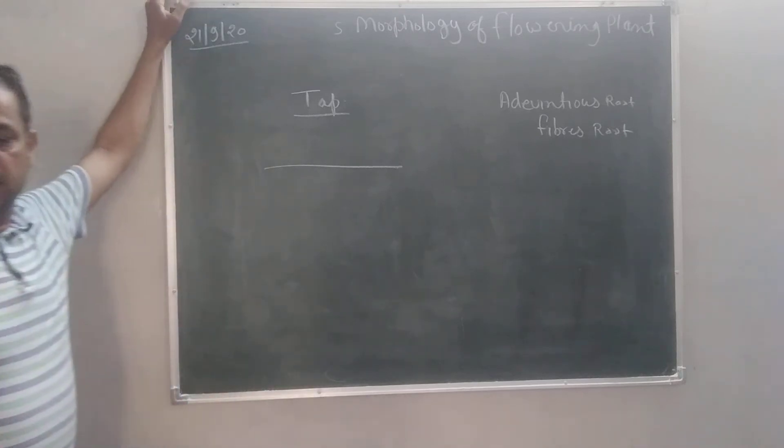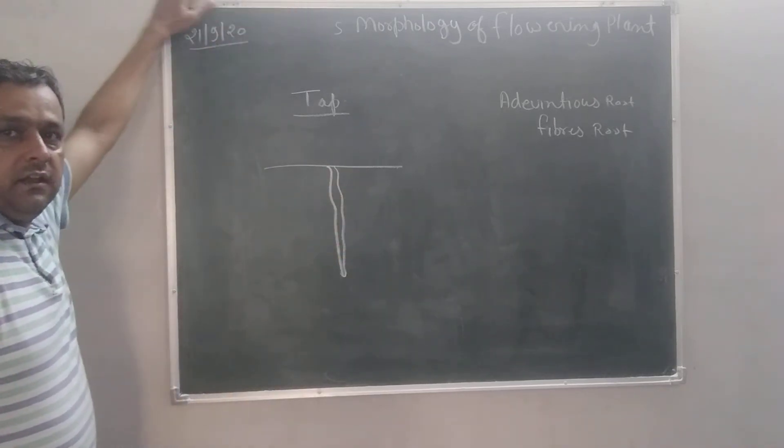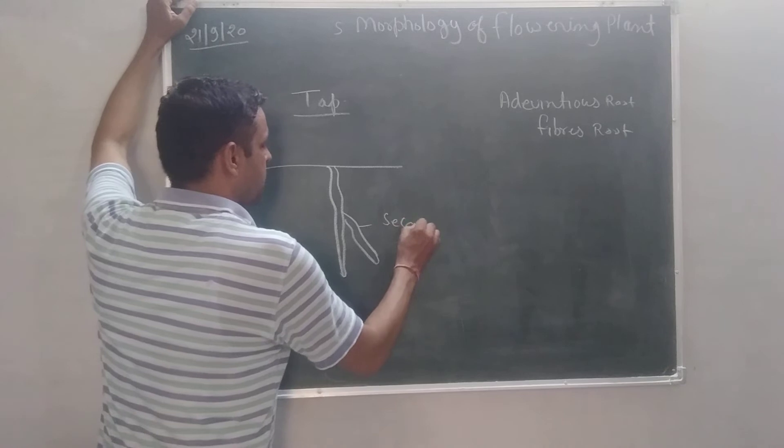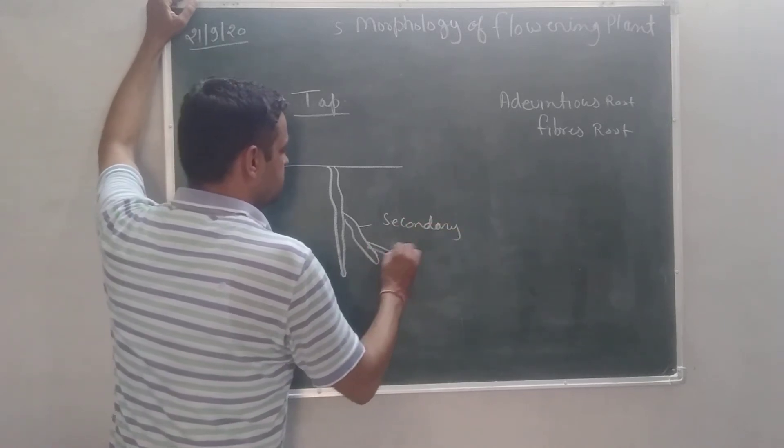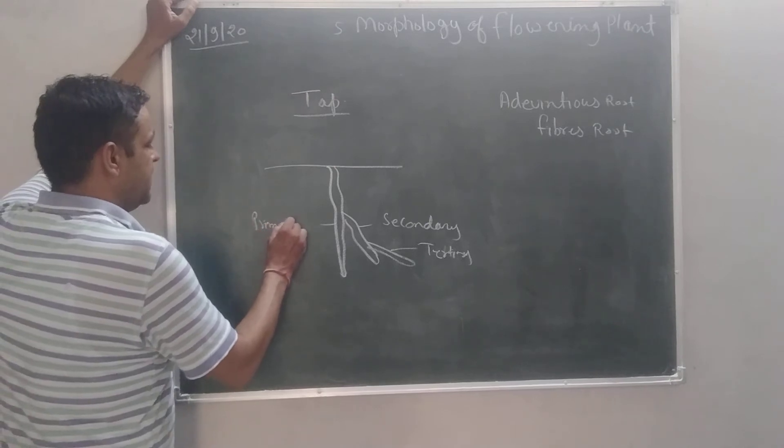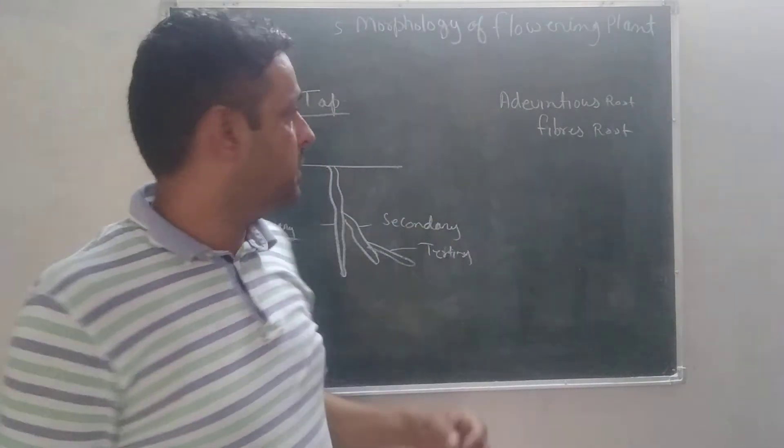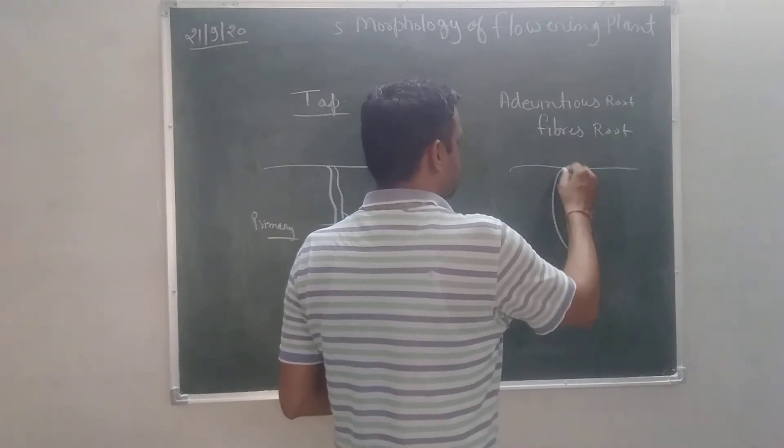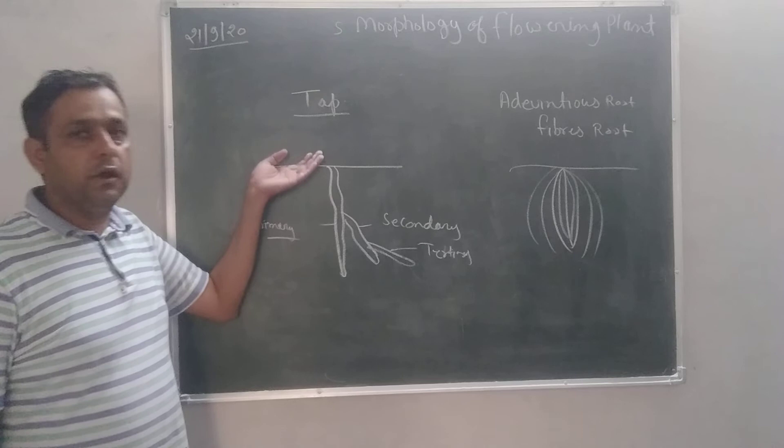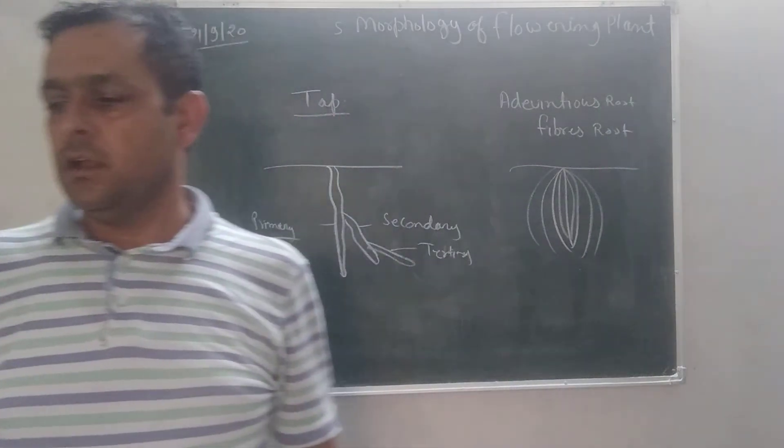In tap root, there is a tap root system. First of all, a primary root arises from a radical. Then it makes its branches that are called secondary and from secondary it arises any branch, it is called tertiary root. All this primary root first arises from radical. And all these parts primary, secondary, tertiary are called tap root system. Whenever any root arises rather than radical, that is called adventitious or fiber root. The example of tap root is dicotyledon plants and the example of adventitious or fibrous root is monocotyledon plants.